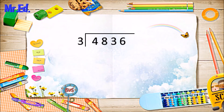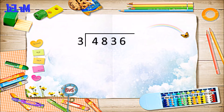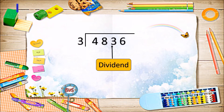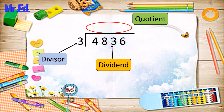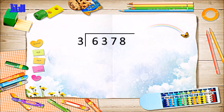Let's recap what we already know about the bus stop method and short division. The long number is our dividend — this is the number we're going to divide. The small number on the outside is our divisor — this is what we divide our dividend by. Above the line is our quotient — this is the answer and the number of times the dividend can be divided by the divisor.